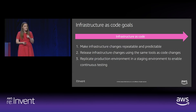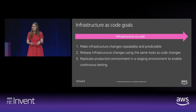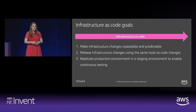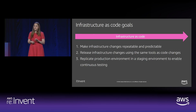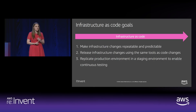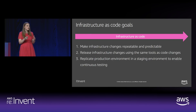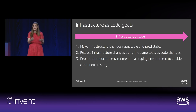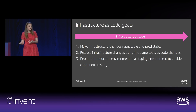Let's circle back to the infrastructure as code goals. Make infrastructure changes repeatable and predictable — with CloudFormation, that's easy because you're deploying the same template from staging to production. Number two: release infrastructure changes using the same tools as code changes — having infrastructure as code pipelines to deliver infrastructure changes to production. And finally, replicating the production environment in a staging environment to enable continuous testing — having that pipeline with source, build, test, and production but with your infrastructure as code changes flowing through it.